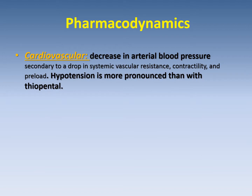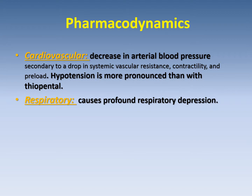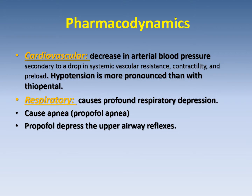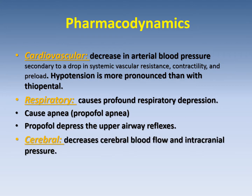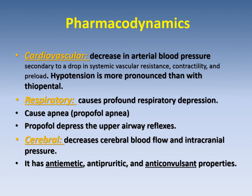Pharmacodynamics: cardiovascular effect — decrease in arterial blood pressure secondary to a drop in systemic vascular resistance, contractility, and preload. Hypotension is more pronounced than with thiopental. Respiratory: it causes profound respiratory depression and may cause apnea, which is called propofol apnea. Propofol also depresses the upper airway reflexes. Cerebrally, it decreases cerebral blood flow and intracranial pressure. It also has some anti-emetic, antipyretic, and anticonvulsive properties.